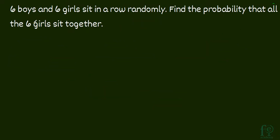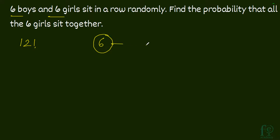Second question: 6 boys and 6 girls sit in a row randomly. Find the probability that all 6 girls sit together. The total number of ways to arrange these 12 students in a row will be equal to 12 factorial. Now, for the favorable events, all 6 girls are to be seated together, so the 6 girls seated together can be considered as a single unit.